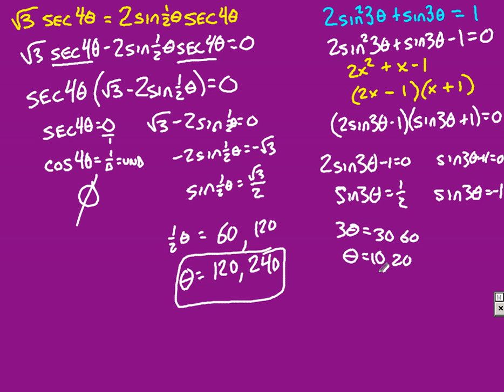And over here, when does sine equal negative 1? When does my y value equal negative 1? That's only when, 3 theta in this case, y equals negative 1 at 270 degrees. So, to get theta by itself, divide by 3, and I should have 90 degrees as my answer.